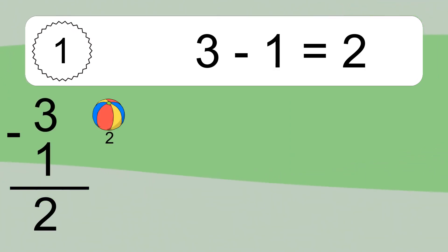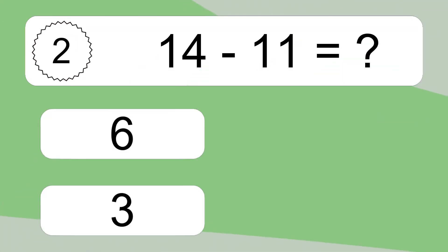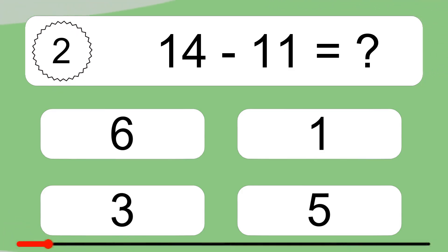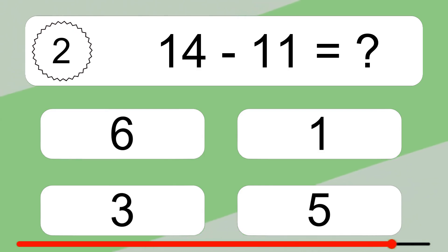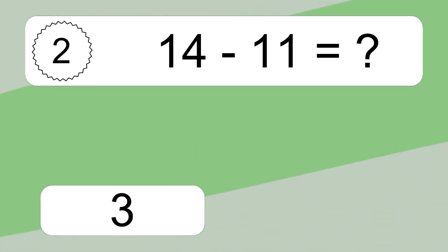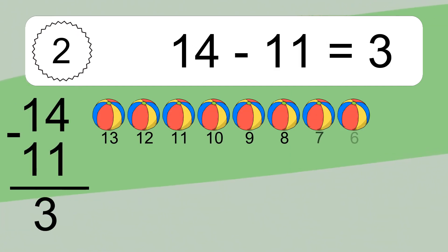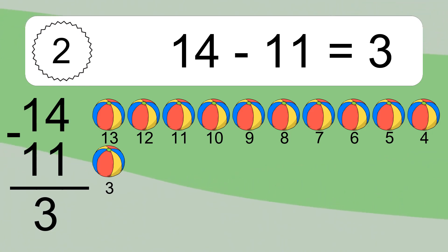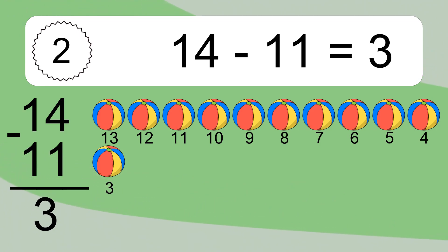Let's count it. 14 minus 11 equals what? 14 minus 11 equals 3. Let's count it: 13, 12, 11, 10, 9, 8, 7, 6, 5, 4, 3.